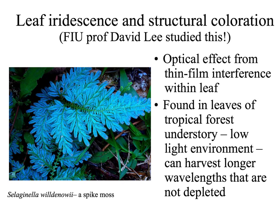A professor emeritus at FIU, David Lee, studied structural coloration and found that some leaves appear blue because of an optical effect from thin-film interference within the leaf. Many of the plants that look this way are found in the understory of the tropical rainforest, a very low-light environment, and this allows them to harvest longer wavelengths not depleted by the canopy above.